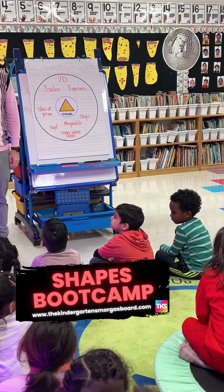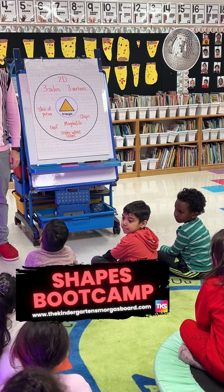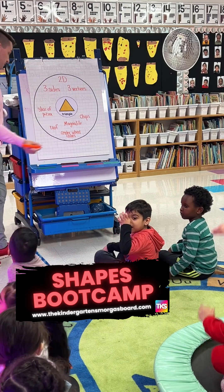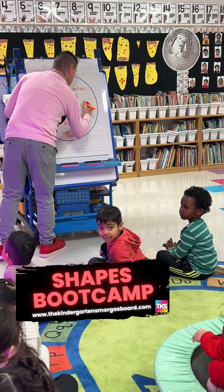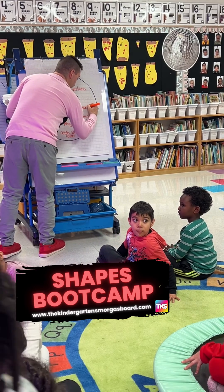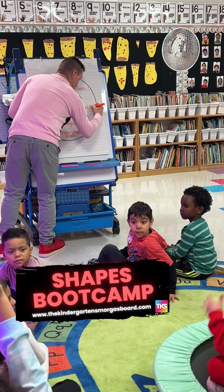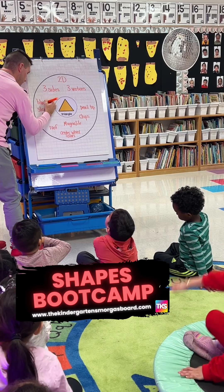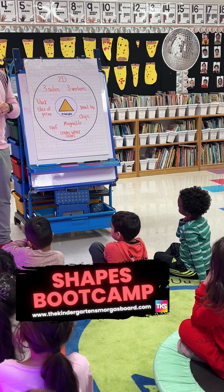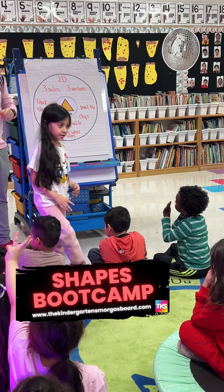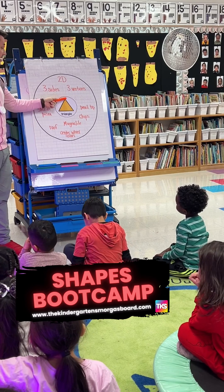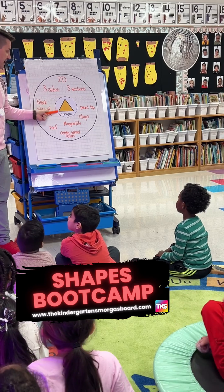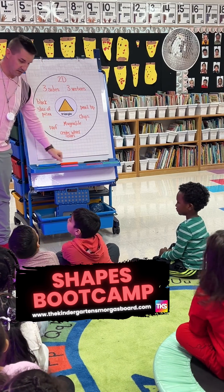The end of a pencil is a triangle. So what shape did we learn today? A triangle! And how do you know it's a triangle? Because it has three sides and three vertices. Excellent job!